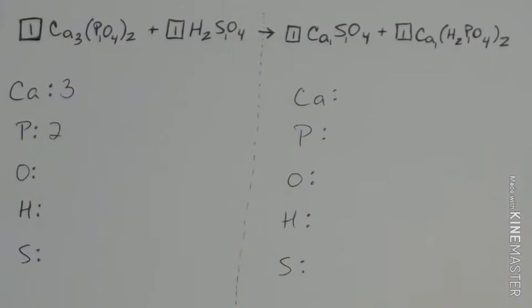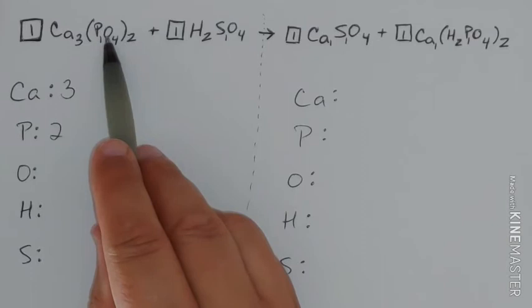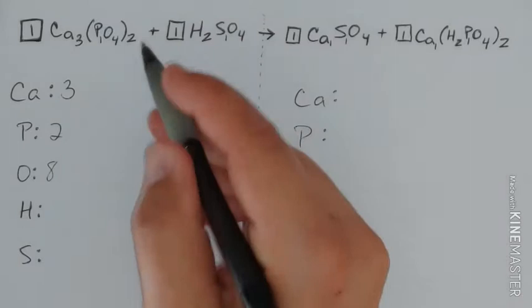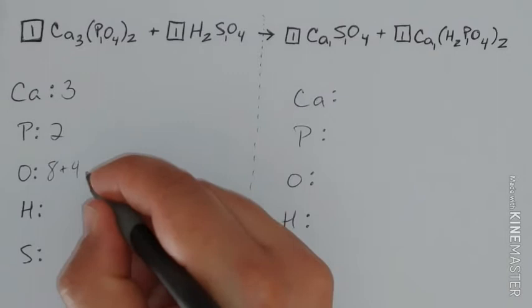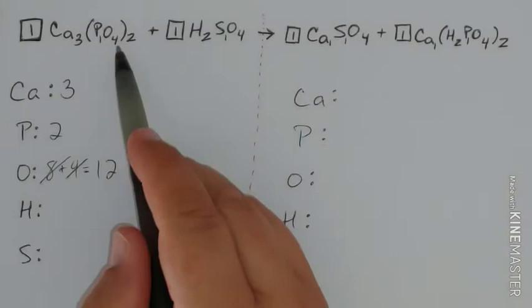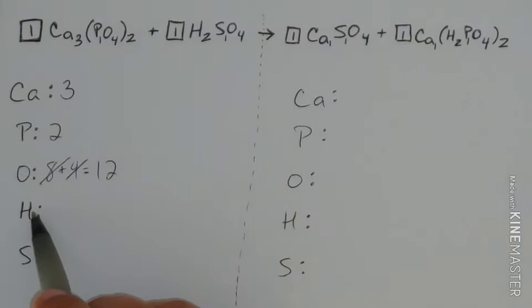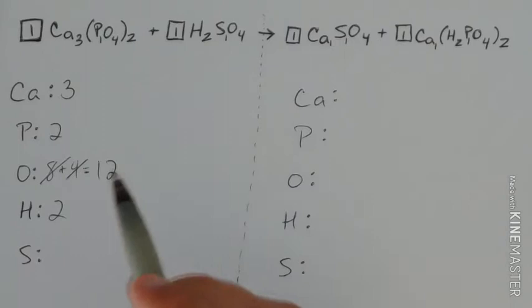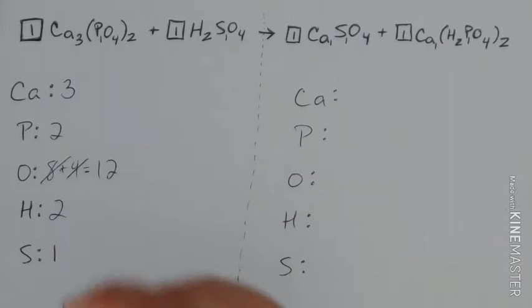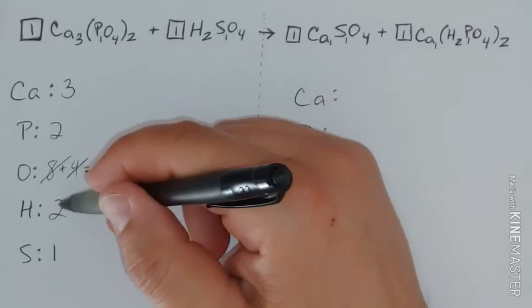Now, for the oxygen, it gets kind of tricky. We have O4, but it shows up twice. So four times two is eight. However, don't forget, we also have four oxygen here. So we actually have 12 oxygen. So four times two is eight plus four here. That's 12. Hydrogen, no hydrogen here. We have two hydrogen. And for sulfur, there's no sulfur here. Sulfur here, there's one. So three calcium, two phosphorus, 12 oxygen, two hydrogen, and one sulfur.